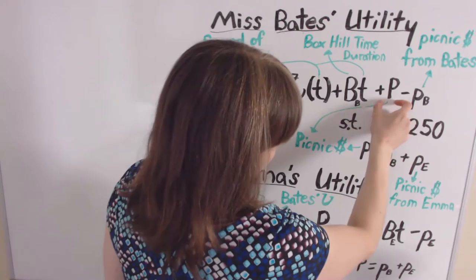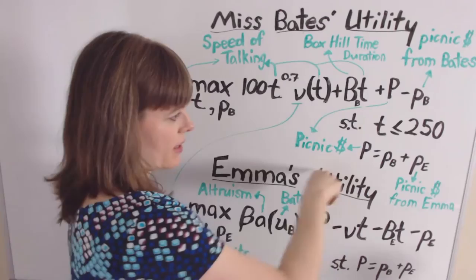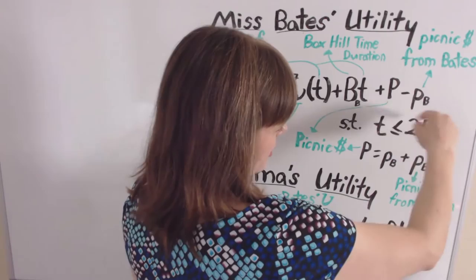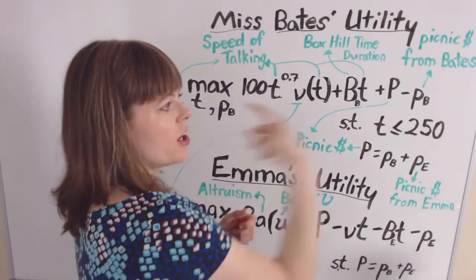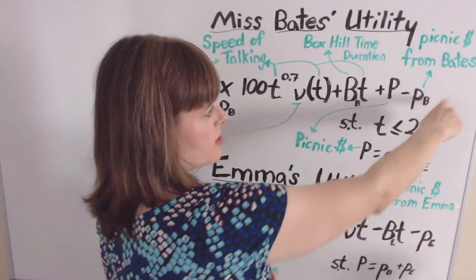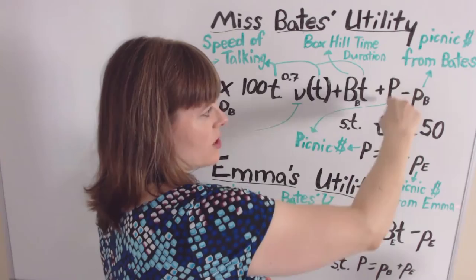The third component is P, the amount of money spent on the picnic, which can be interpreted as the quality of the picnic. The final component is negative — something she dislikes — the amount of money she has to contribute to the picnic. That is a choice variable. The more she contributes, the more unhappy she is about this term, but the more she contributes, the more she enjoys the picnic, which is captured in the quality term.